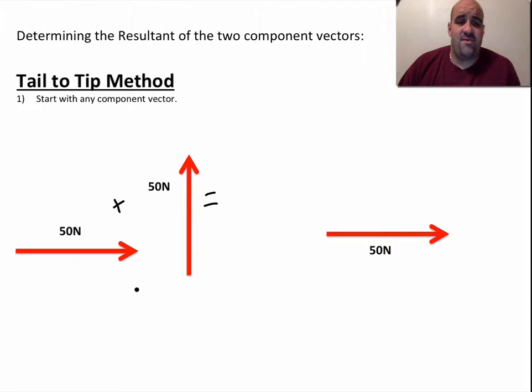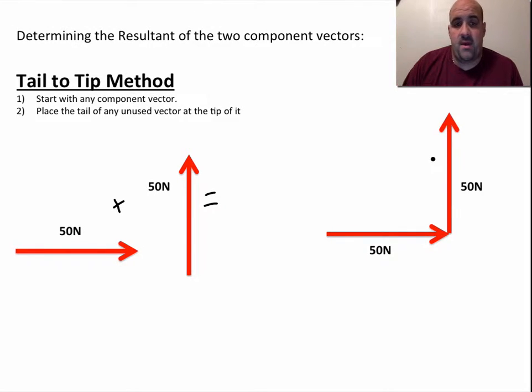You start with either of the vectors, any of the vectors you want. We could have started with the other one if we wanted to. You just basically draw it in, and then you simply attach this other vector directly to it. It's called tail-to-tip for a reason, because we're going to take the tail of this vector and attach it to the tip of this vector right there. That's really all you've got to do.